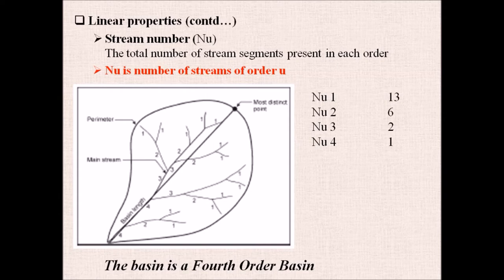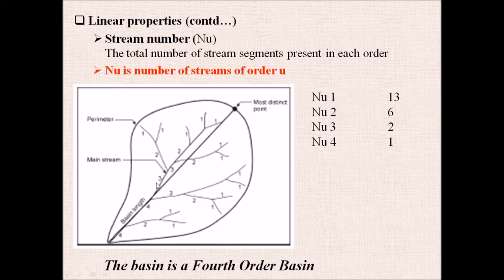Another linear property is the stream number — the total number of stream segments present in each order, represented as Nu where u is the order. For example, counting the streams in this basin: there are 13 first-order streams, six second-order streams, two third-order streams, and one fourth-order stream, confirming this is a fourth-order drainage basin.